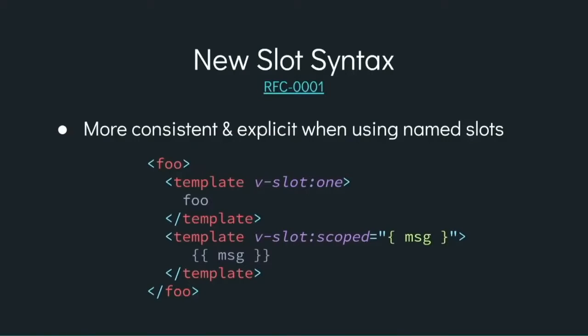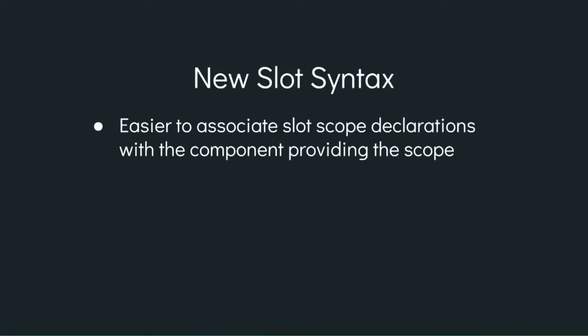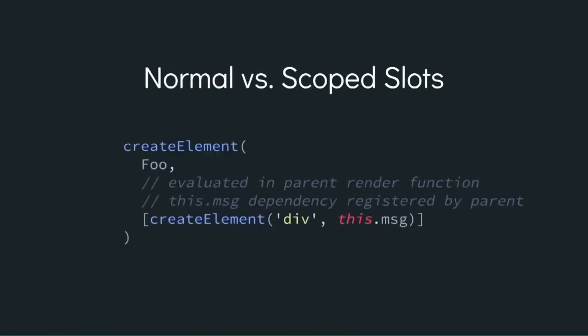In the past you could use either template wrappers for slots or omit them, and you could give multiple elements the same slot name and they'd be implicitly grouped. Although flexible, this resulted in many different ways of writing slots. The new syntax intentionally forces everyone to use the same style, resulting in more consistent and readable templates. It's also easier to associate slot scope declarations with the component providing the scope — I encourage you to check out the RFC for full details.